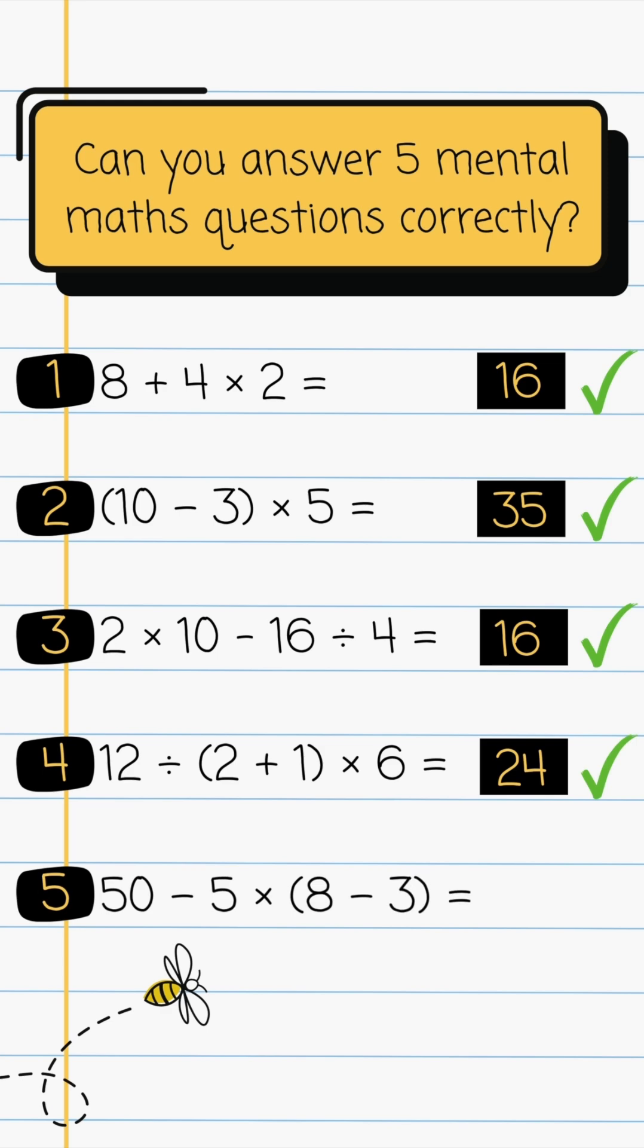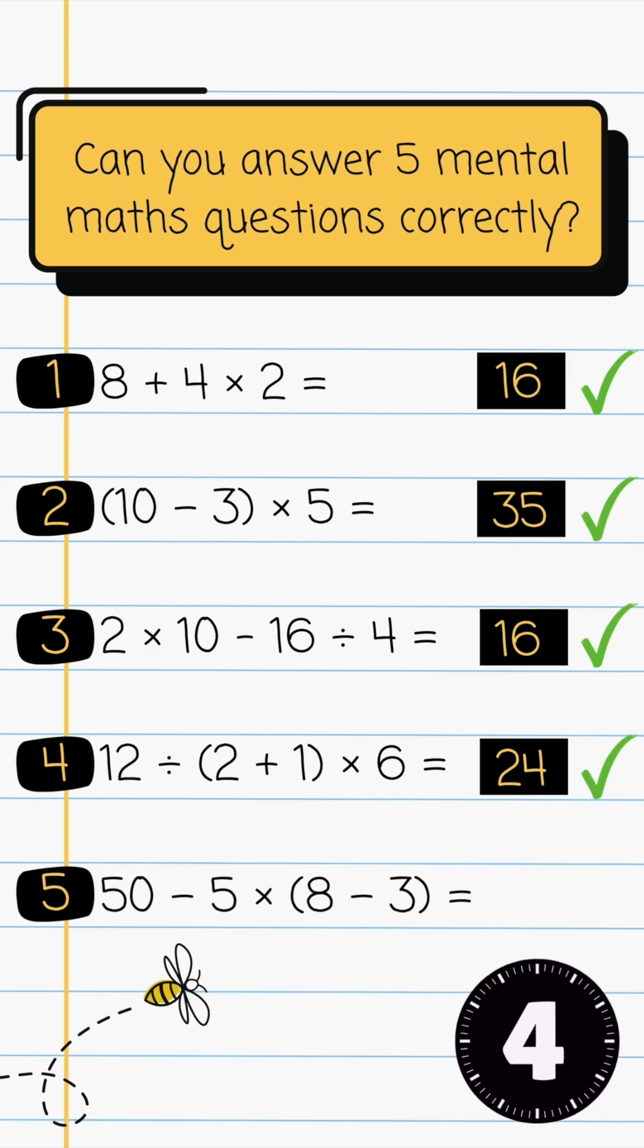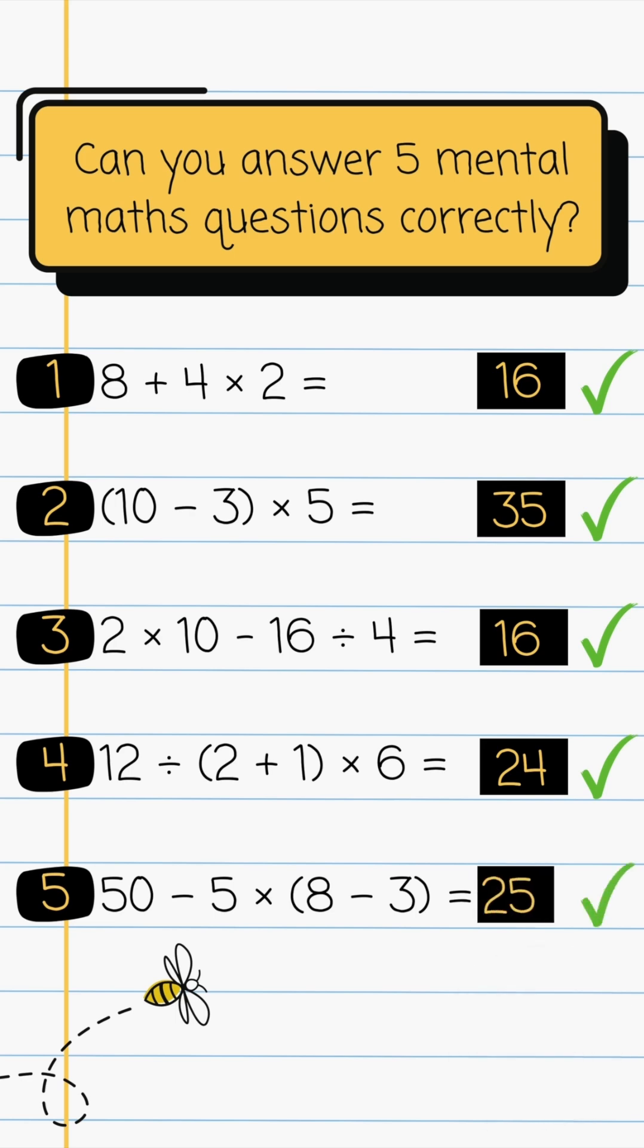Finally, question 5. Don't forget to drop your score in the comments. 50 subtract 5 multiplied by 8. Subtract 3. The answer is 25.